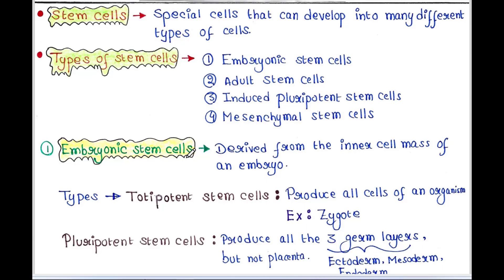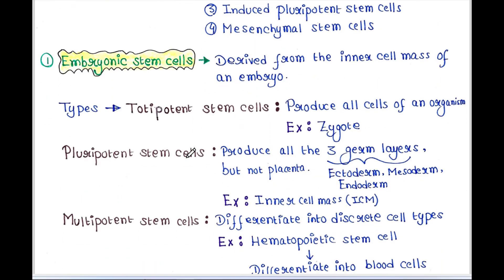First are embryonic stem cells. Embryonic stem cells are derived from the inner cell mass of an embryo. An early embryo has two cell layers: trophoblast and inner cell mass. From that inner cell mass, these embryonic stem cells are derived.